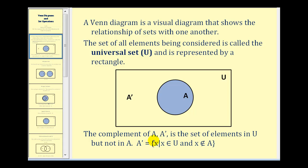The complement of A is the set of all elements in U not in A. Or using set builder notation, the complement of A is the set of elements x such that x is an element of U and x is not an element of A.